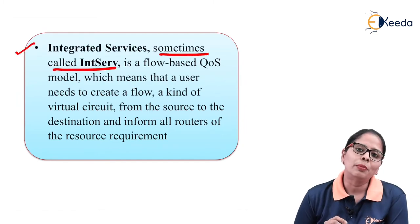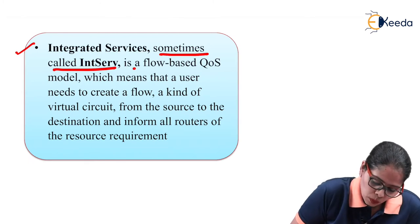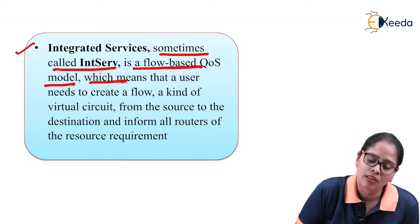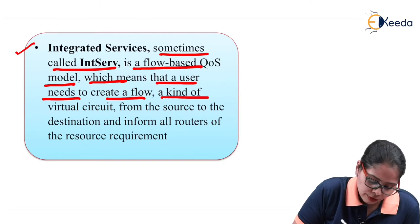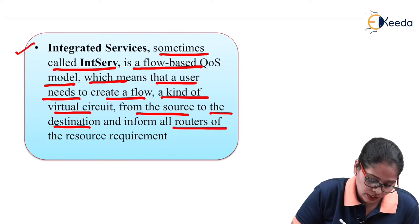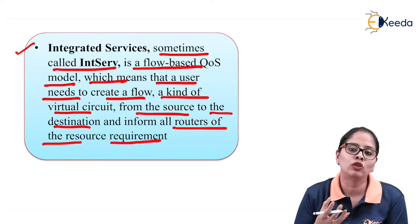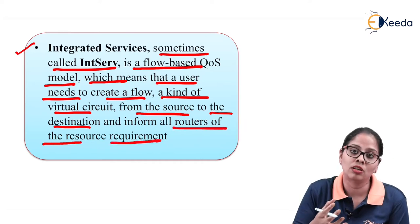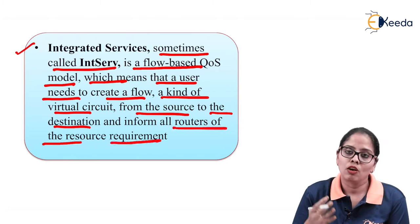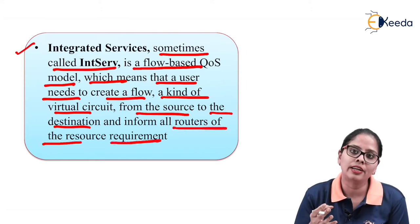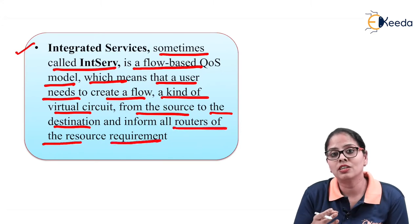Integrated service, sometimes called INTSERV, is a flow-based quality of service model. The integrated service will provide quality of service per flow. This means the user needs to create a kind of virtual circuit from source to destination and inform all the routers of the resource requirement. Basically, we are going to form the flow, and whatever routers come in between, you have to inform each router how much resource to reserve for that flow. The integrated service basically implements quality of service per flow.